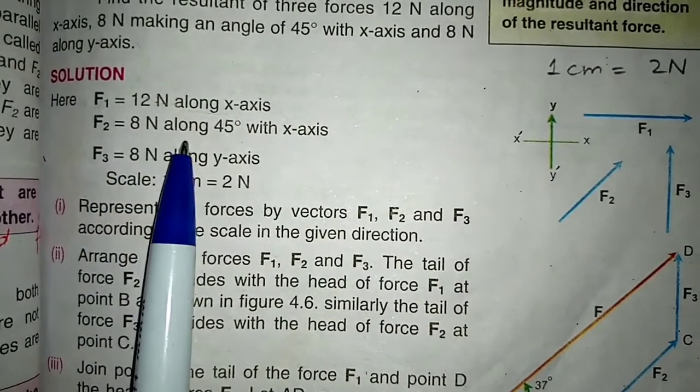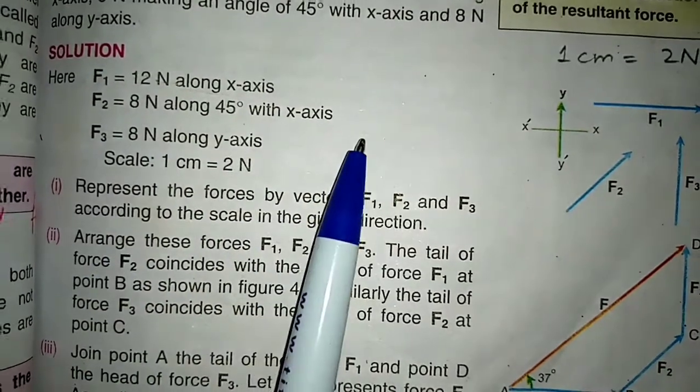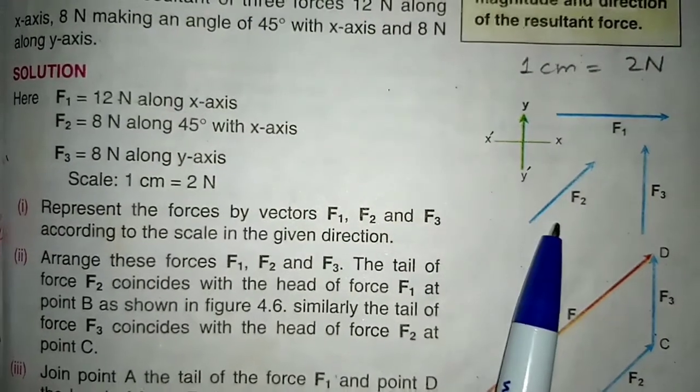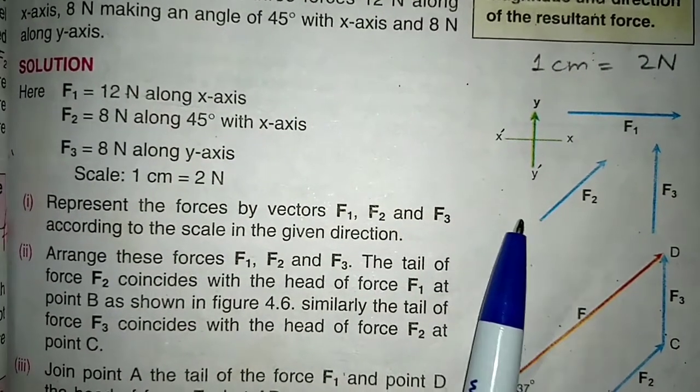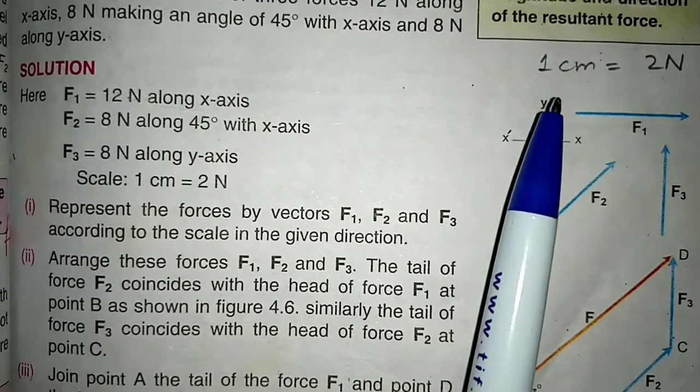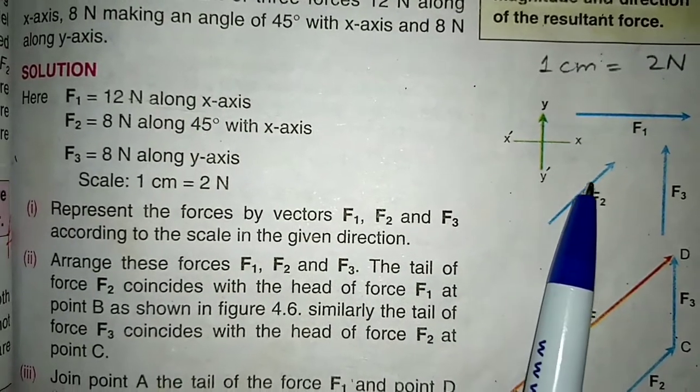Next, 8 newton along 45 degrees with x-axis. Now, this vector is at 45 degree angle with the x-axis. As 1 cm equals 2 newton, then 8 newton will equal 4 cm. So, we have drawn a 4 cm line.